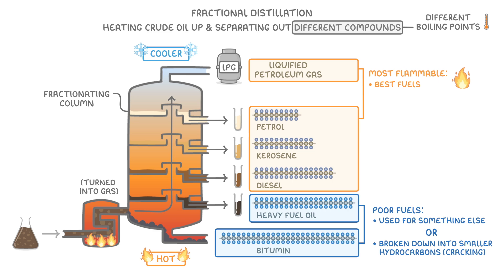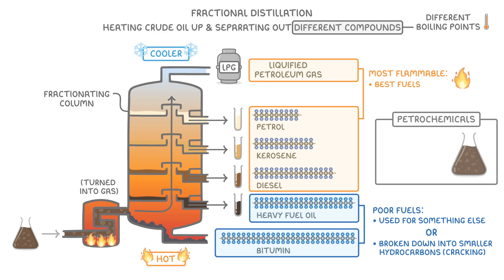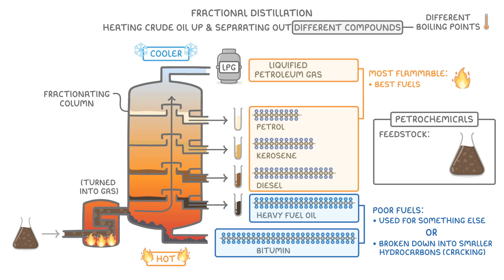The last thing to point out is that as well as all of these fairly direct uses that we've mentioned here, petrochemicals — which is what we call all of these substances that we get from crude oil — can also be used as feedstock, which just means raw materials for the petrochemical industry. You use them to make things like solvents, lubricants, polymers, and detergents.